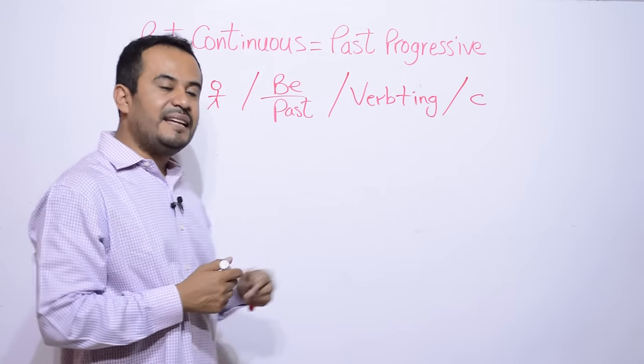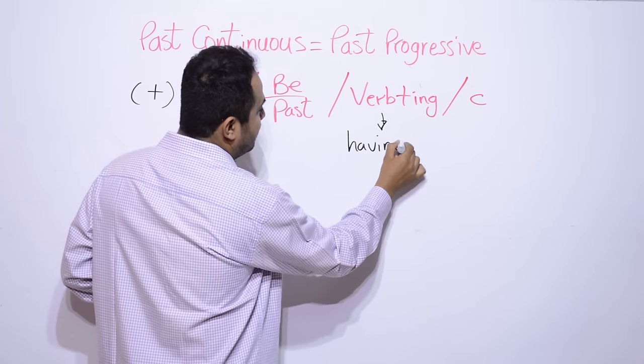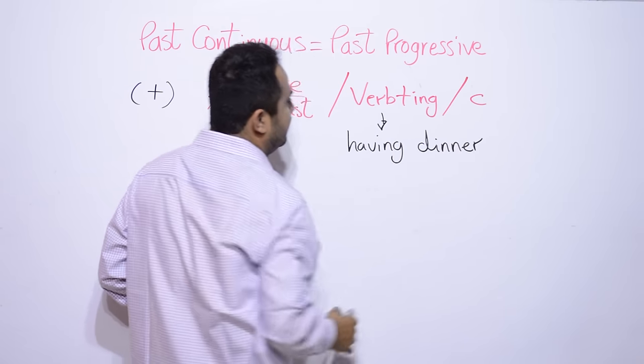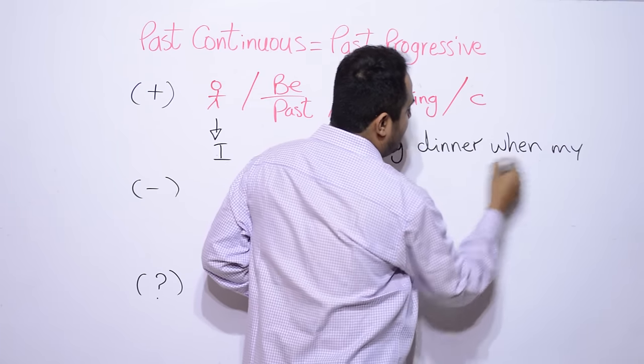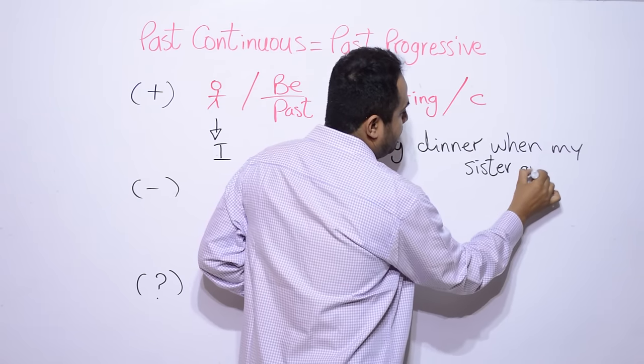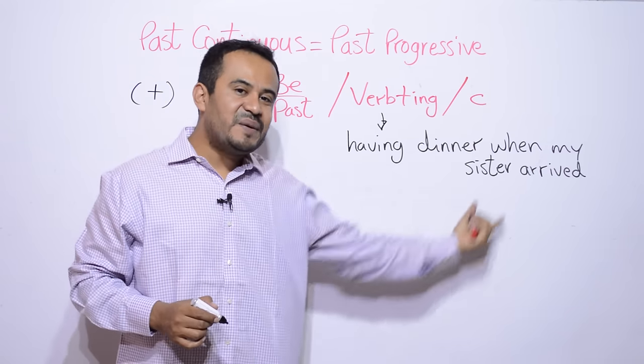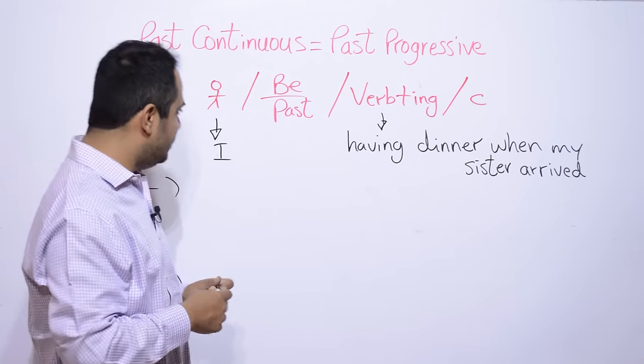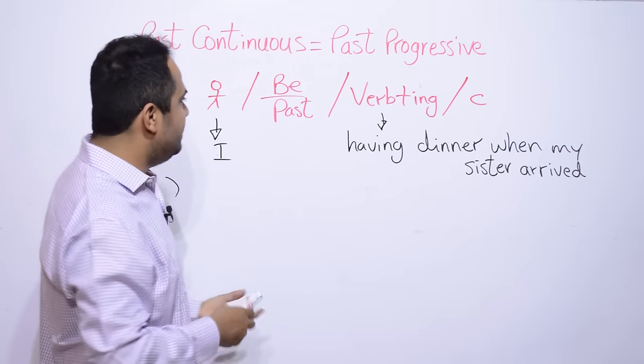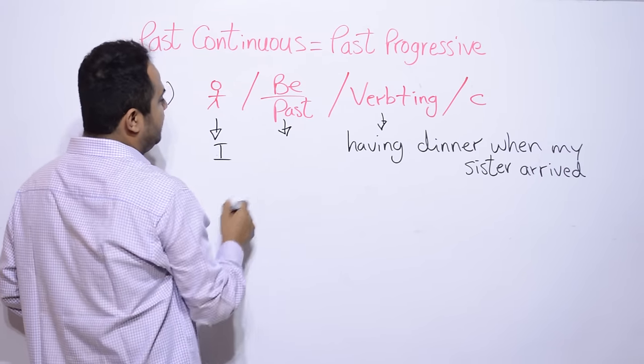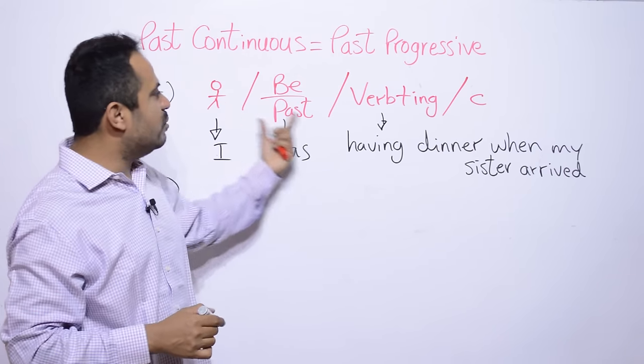Tienes que usar siempre verbo to be porque imagínate que dices I y luego dices having dinner. Bueno, vamos a poner un complemento más extenso. Yo cenando cuando mi hermana llegó. Entonces, esto no es coherente. No es, no hay un seguimiento coherente dentro de este enunciado. Entonces, así no hablamos. Obviamente, en inglés tampoco se habla así. Entonces, aquí siempre debe de ir verbo to be. En este caso aquí es I was.